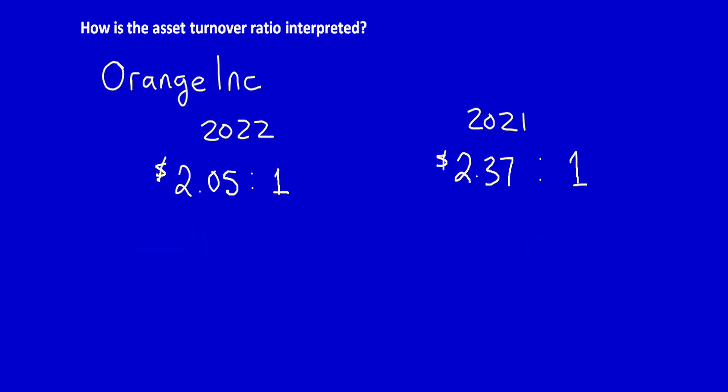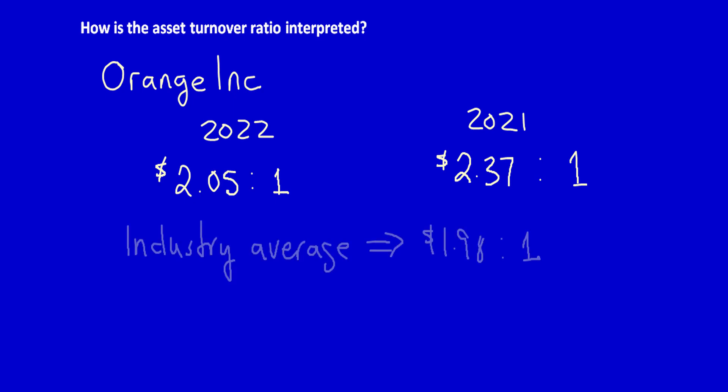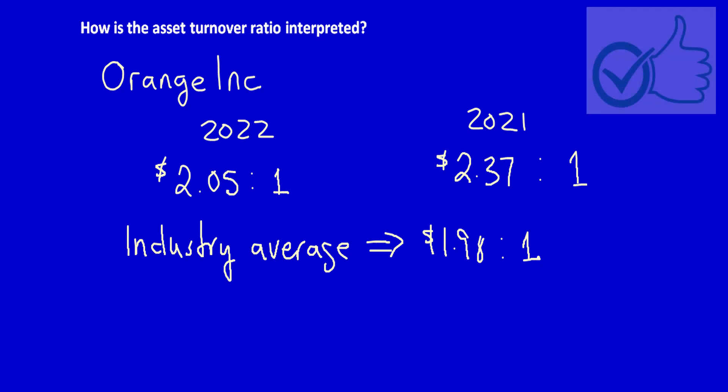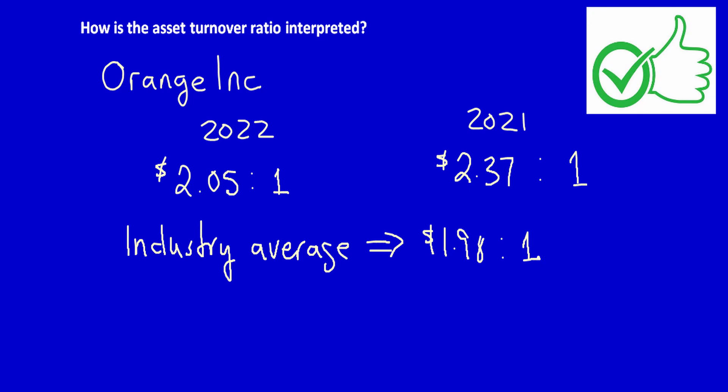We should also compare Orange's ratio to the industry average against its peers. Say the industry average is one dollar and ninety-eight cents — meaning that for every dollar of assets, companies on average have one dollar and ninety-eight cents of revenue. In that case, although Orange's ratio has declined, it is still above its peers in the same industry, which is good.